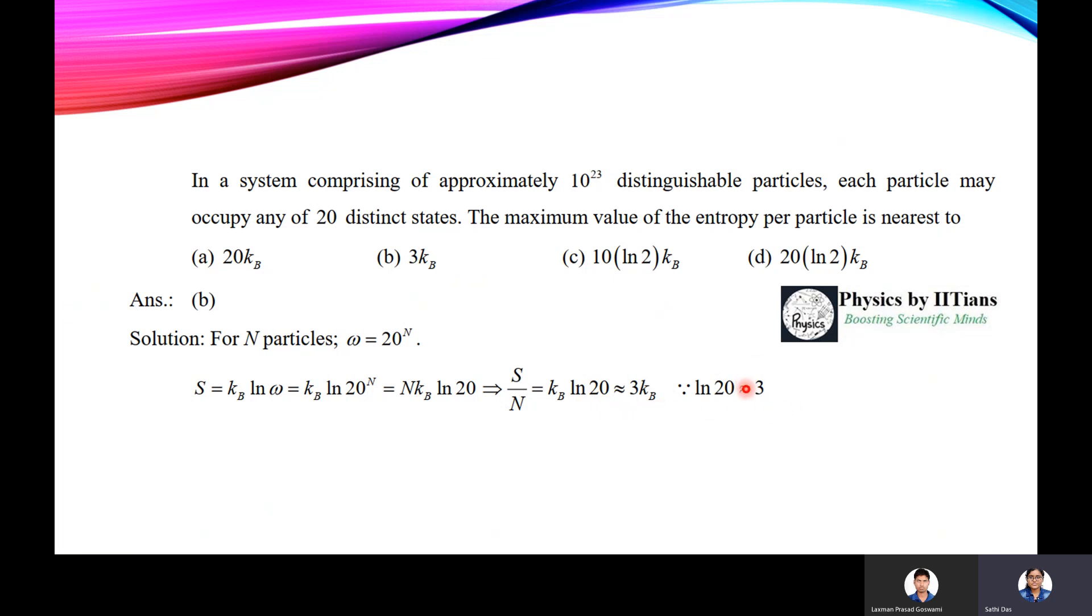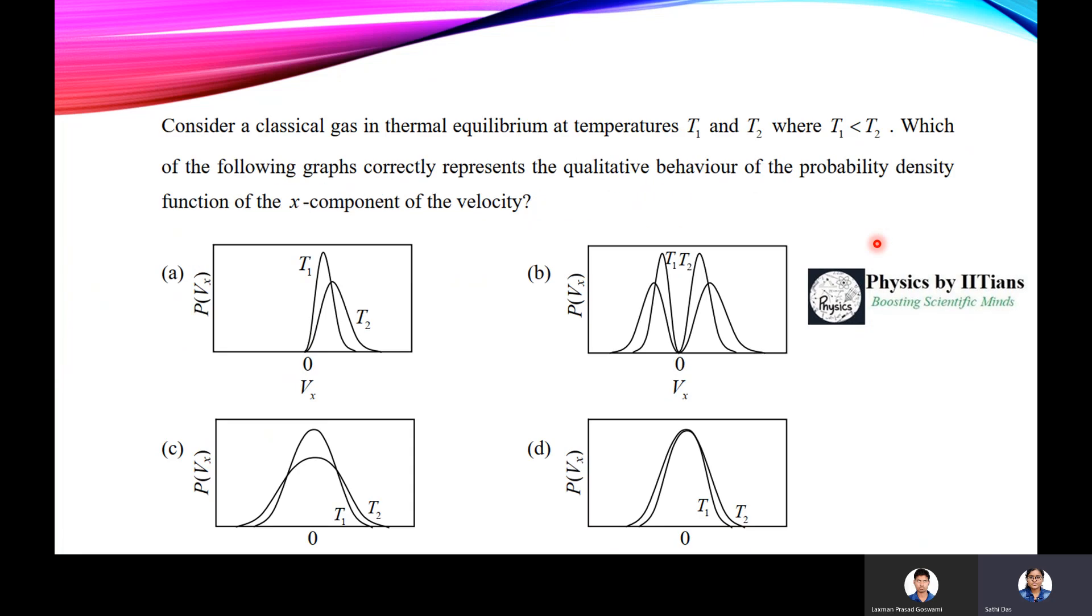We can write it as 3 kb as ln 20 nearly goes to 3. So this answer is option B. Friends, here this case they have asked you the classical particle, and I think that you already know that if they are quantum particles, suppose there are bosons, suppose there are fermions, what will be the maximum value of entropy per particle for this case. You should know that, and also there will be the number of degenerate states you have to consider for the quantum mechanics case.